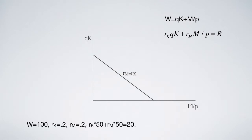For example, given W equal to 100, RK and RM equal to 0.2, the return of a 50-50 combination is 20.